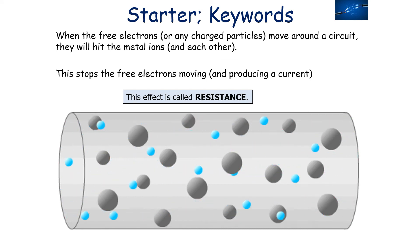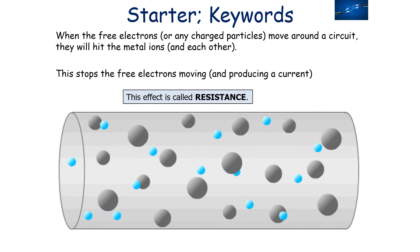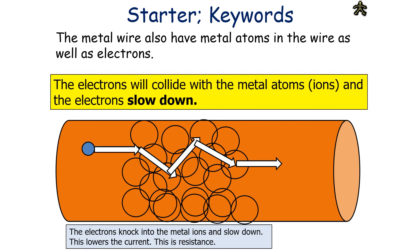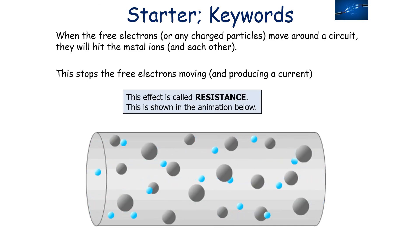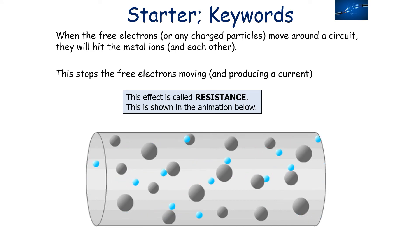When the free electrons, or any charged particles, move around a circuit, they hit the metal ions that make up the metal wire, and this stops the free electrons moving as quickly, reducing the current. This effect is called resistance. The metal wire contains metal atoms or ions as well as electrons. The electrons collide with the metal atoms and slow down, lowering the current. The more blocking of the free electrons moving, the more the resistance. There are many ways to increase resistance, such as increasing the number of metal ions, making the metal ions vibrate more, or decreasing the space between the metal ions.